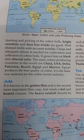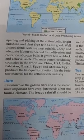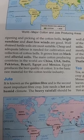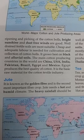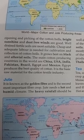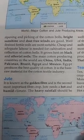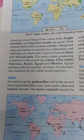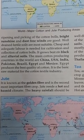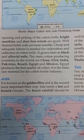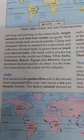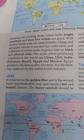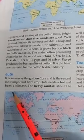Well-drained fertile soil is most suitable for cotton. Cheap and adequate labor is needed for cultivation and collection of cotton bolls. It grows best on black and alluvial soil. The main cotton producing countries are China, USA, India, Pakistan, Brazil, Egypt and Mexico. Egypt produces the best quality cotton. Cotton is the basic raw material of the cotton and textile industry. In India, cotton is mainly grown on the Deccan Plateau — Maharashtra, Madhya Pradesh and Gujarat are the leading cotton-producing states.